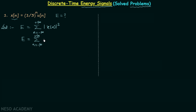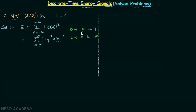U[n] is equal to 0 for integer values of n from minus infinity to minus 1, and it is equal to 1 for integer values of n from 0 to plus infinity. Since we are multiplying (1/3)^n by U[n], the values from minus infinity to minus 1 will be 0. Therefore we can change the range of summation from minus infinity to infinity to instead perform the summation from 0 to infinity.